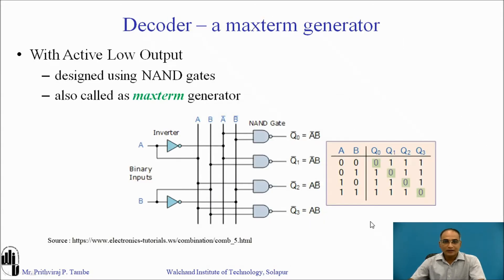Now let us learn about a decoder with active low outputs. This decoder is designed using NAND gates and is also called a maxterm generator. Looking at the logic diagram, the outputs are: Q0 is A-bar B-bar which equals A plus B, Q1 is A plus B-bar, Q2 is A-bar plus B, and Q3 is A-bar plus B-bar. In the truth table, when binary inputs are 00, Q0 will be 0 and other outputs are 1; when inputs are 01, Q1 will be 0 and other outputs are 1. So Q0 through Q3 represent the maxterms, which is why this decoder with active low outputs is also called a maxterm generator.